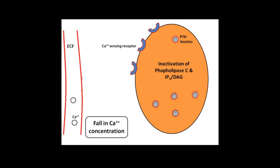Because of this, the parathyroid hormone vesicles which are stored in the parathyroid gland move towards the cell membrane, where they fuse with the cell membrane and cause release of parathyroid hormone.